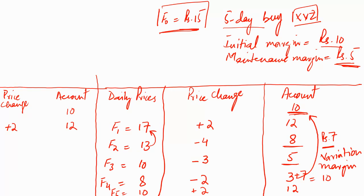When F2 is 13, instead of comparing to 17 we compare it with 15 — a 2 rupee decrease from F0, so we write minus 2. In this method each margin account adjustment is made from the base value, so decreasing by 2 gives a new level of 8 — exactly the same amount as before. When F3 is 10, it's a 5 rupee decrease from F0, so we write minus 5 and deduct 5 from the base value of 10, giving a new margin account of 5.